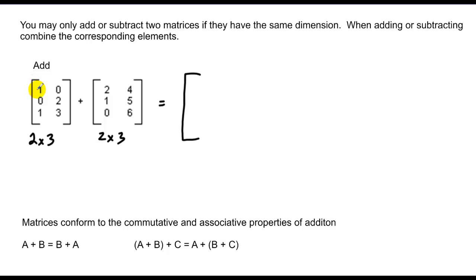So in this case, first row, first column, I have 1 plus 2. First row, second column, 0 plus 4, 0 plus 1, 2 plus 5, 1 plus 0, 3 plus 6. And then I add all those up, and I get 3, 1, 1, 4, 7, 9.